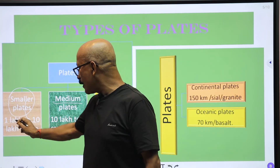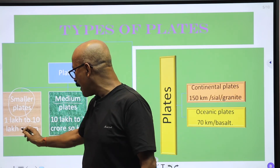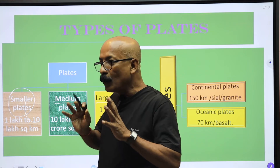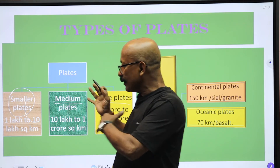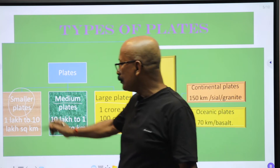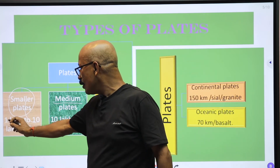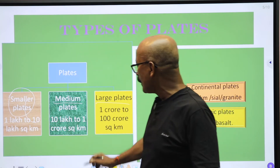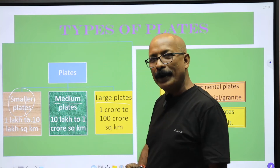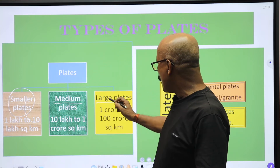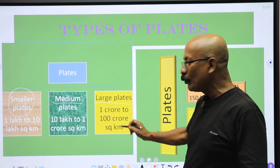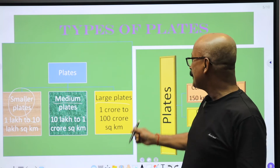Smaller plates range from 1 lakh to 10 lakh square kilometers. Medium plates range from 10 lakh to 1 crore square kilometers. Large plates range from 1 crore to 100 crore square kilometers.